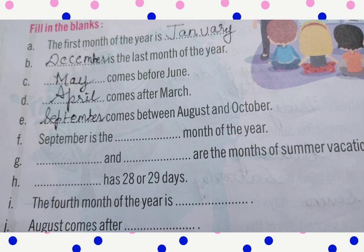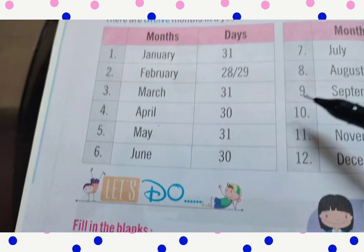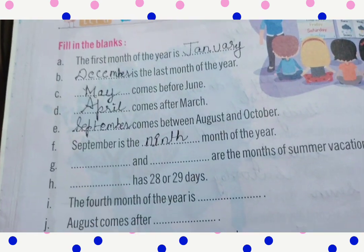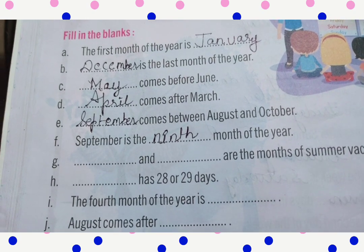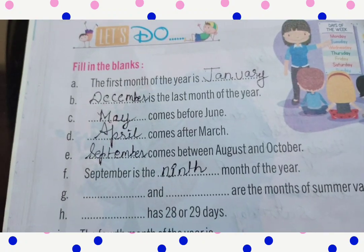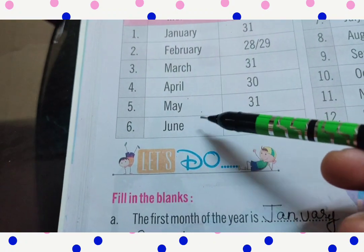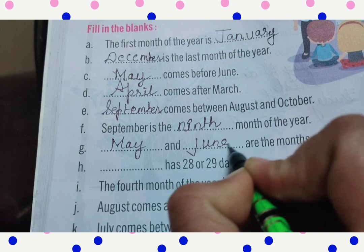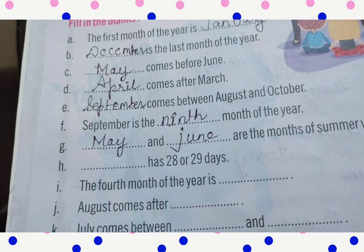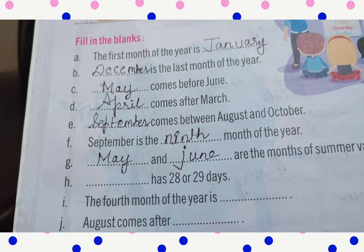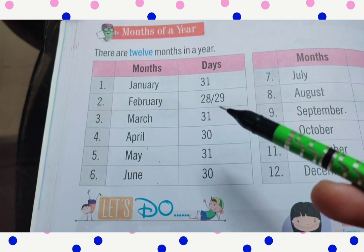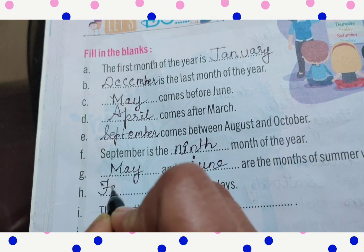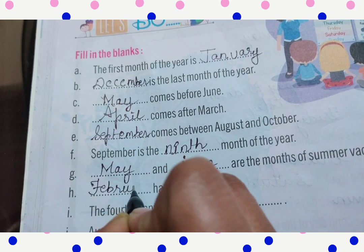Part F: September is the ninth month of the year. Part G: May and June are the months of summer vacation. Part H: February has 28 or 29 days — F-E-B-R-U-A-R-Y.